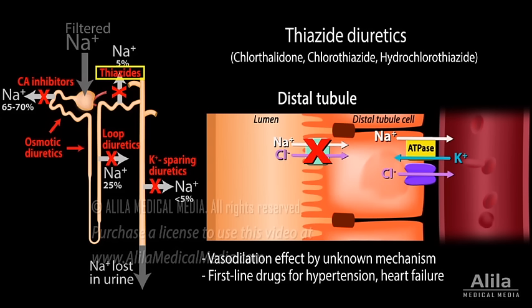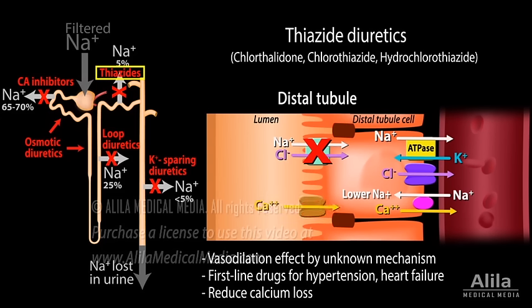Unlike loop diuretics, thiazides reduce calcium loss in urine, and can be used to prevent formation of new calcium kidney stones. This is because lower intracellular sodium induced by thiazides leads to higher calcium reabsorption mediated by the sodium-calcium exchanger located on the basolateral membrane. Other side effects are similar to those of loop diuretics and include hypokalemia, metabolic alkalosis, and hyperuricemia.